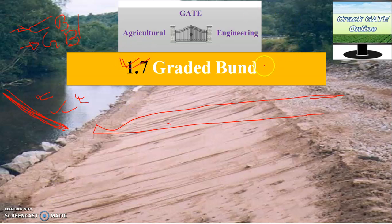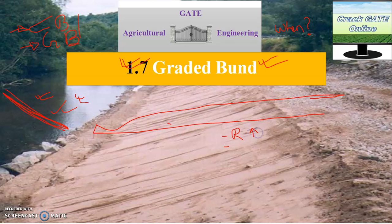Where do you need the graded bund? When you want to dispose of the excess amount of water, you need the graded bund. You have to apply the logic: to dispose of excess water, your rainfall will be high, you have a waterlogging situation, you have less permeable soil, and your infiltration capacity is low. In all these conditions, you have to use the graded bund.